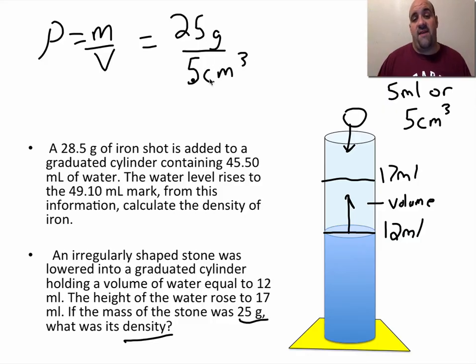So that's how we use volume displacement or water displacement to determine the volume of irregularly shaped objects and how to calculate density, assuming we know the mass of the object as well. This is Mr. Zappone.